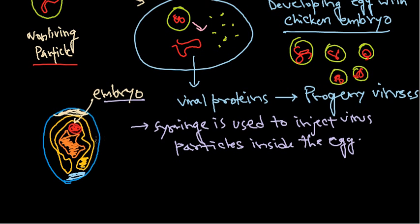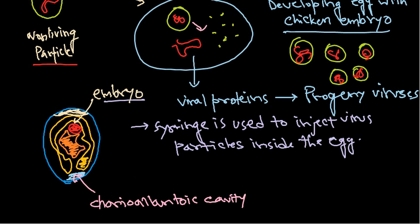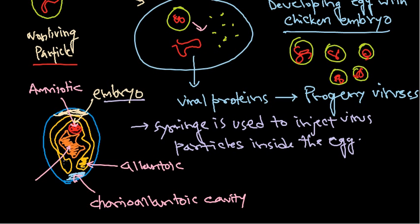The four injection sites are: the chorioallantoic cavity, the allantoic cavity, the amniotic cavity, and the yolk sac. We can inject virus particles into any of these different places, and it completely depends on the type of virus we are dealing with.